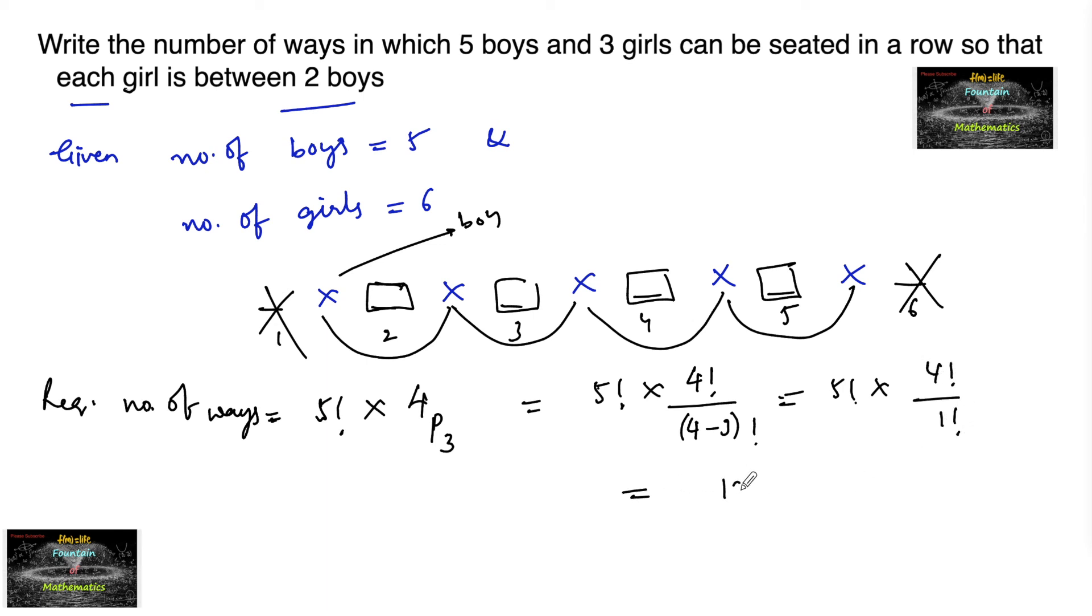That is, 5 factorial is 120 and 4 factorial is 24. 24 times 120, after calculation, you will get 2880.